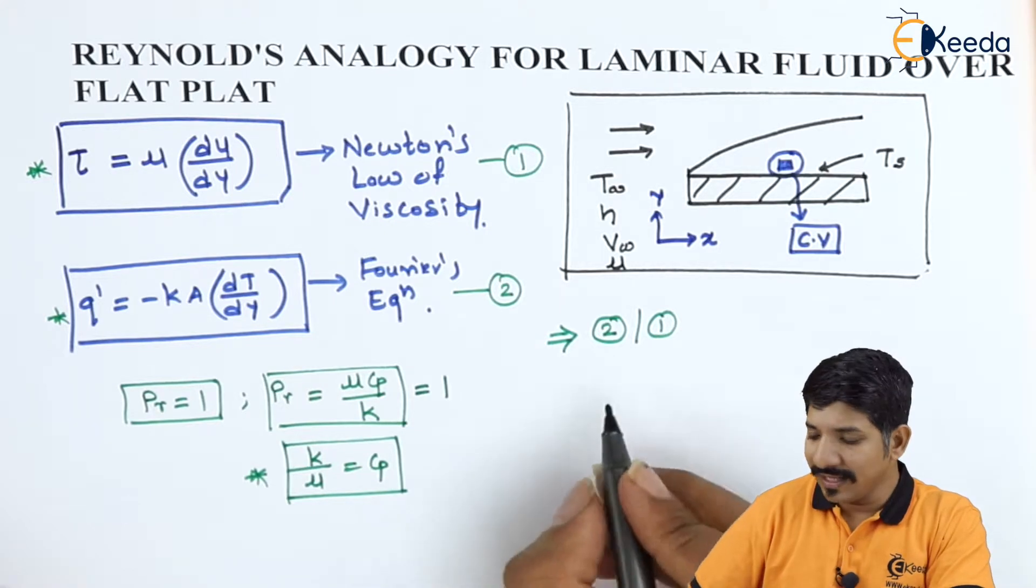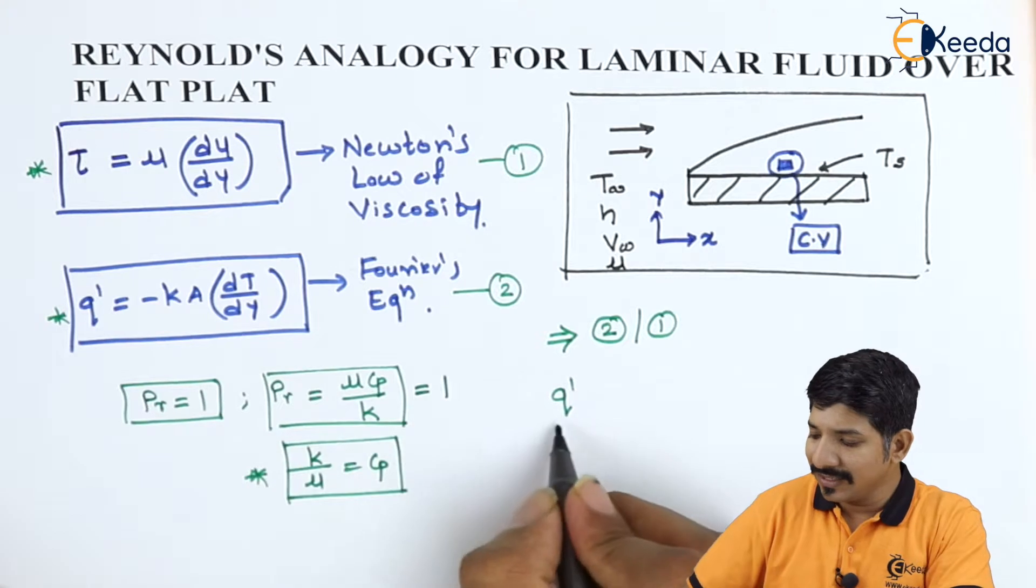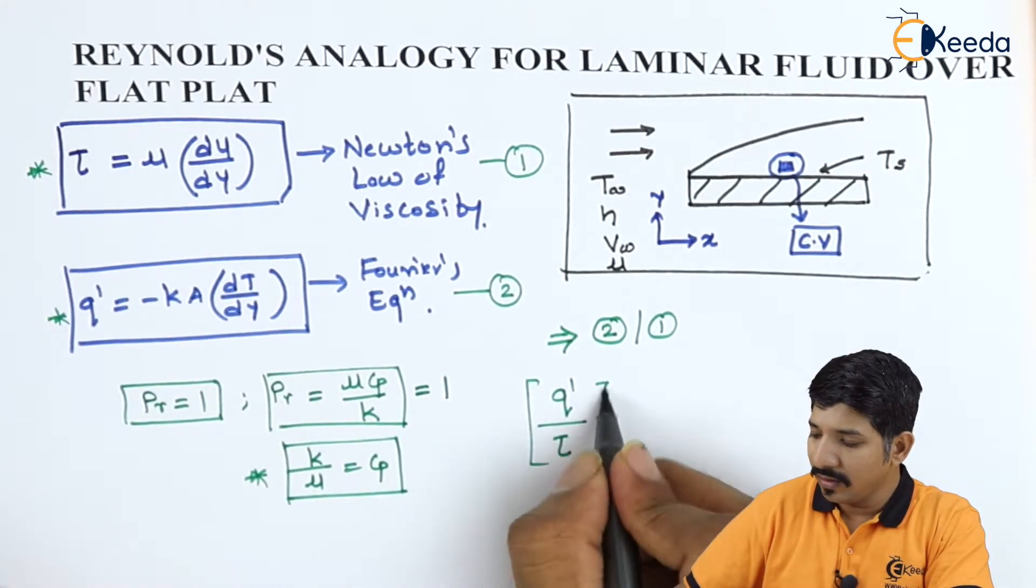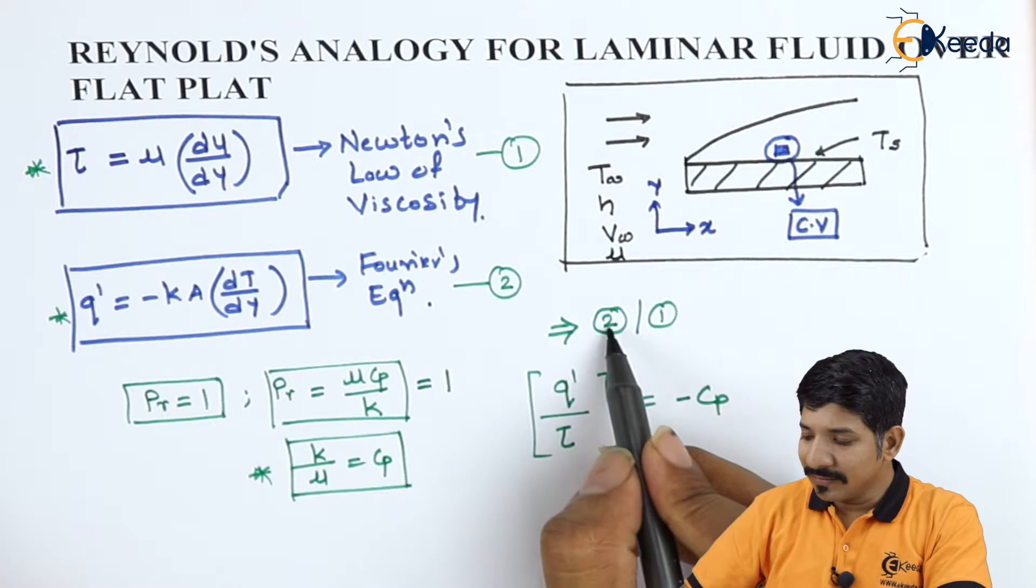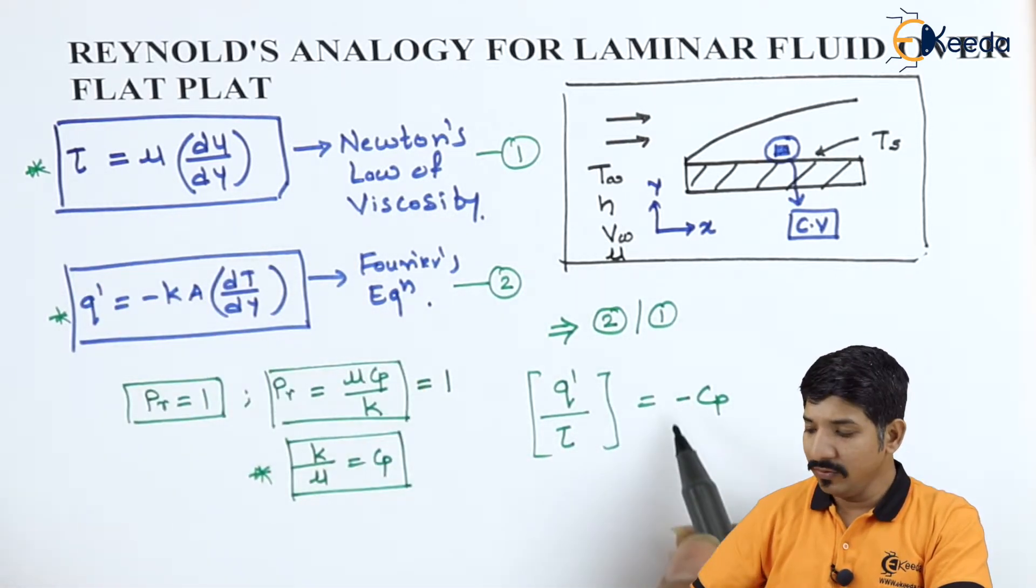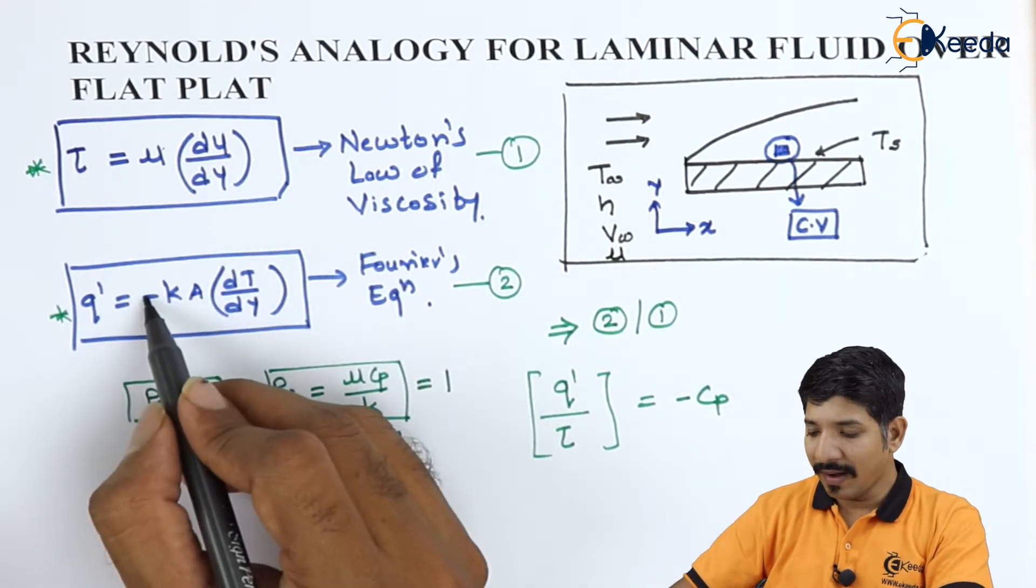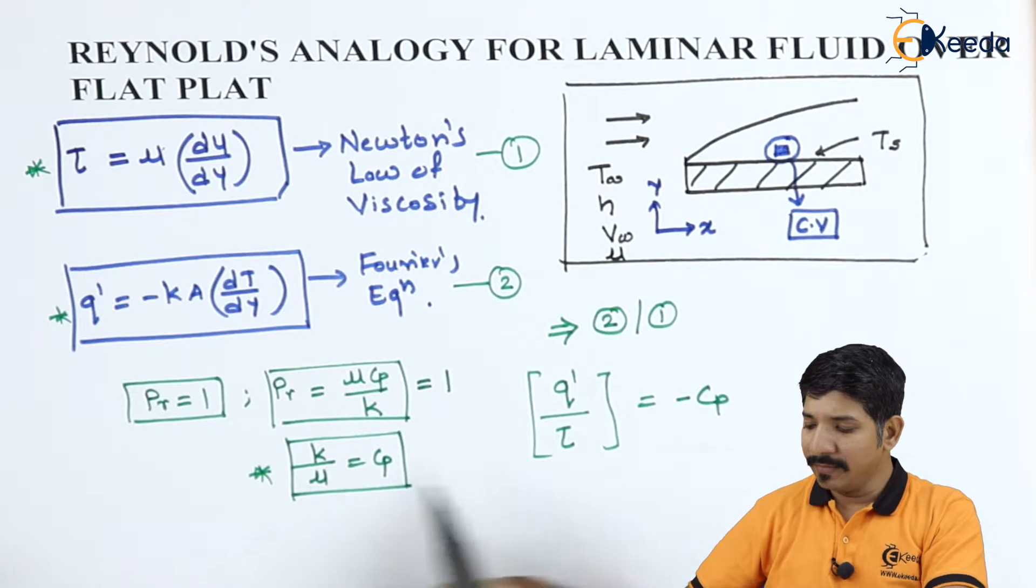If we are doing it so, then what do we have? We can write this as q' upon tau. If we divide equation number 2 and 1, we have this thing that is q' upon tau is equal to k by mu, which is given by Cp. This minus sign will reflect as it is. And k by mu, that is Cp, we are going to write as it is here.